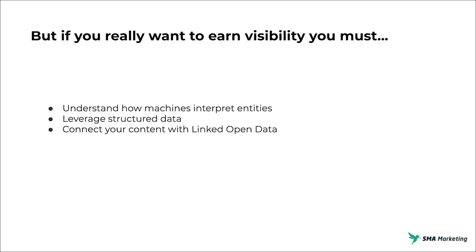You also need to leverage structured data — something we've talked about quite a bit on this channel. Structuring your content and pages and adding those additional layers of information for machines helps them better understand the context of what you're trying to say. And lastly, you need to connect your content with linked open data — these massive database resources that Google pulls from within the knowledge graph to better understand what entities are, creating connections that help them understand the context of your content.